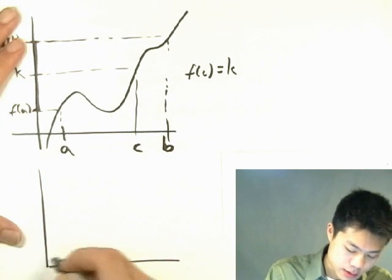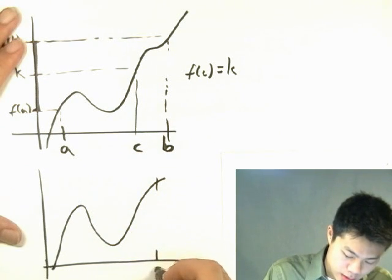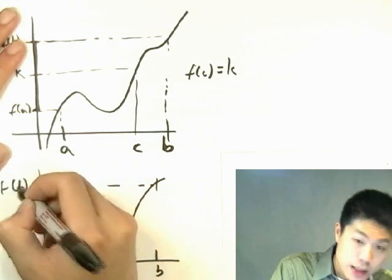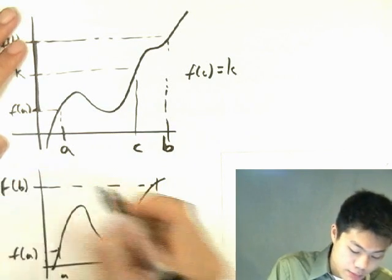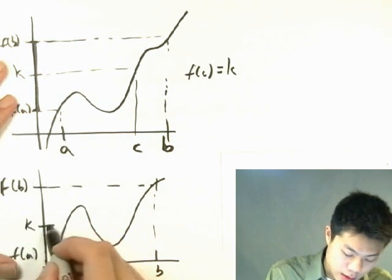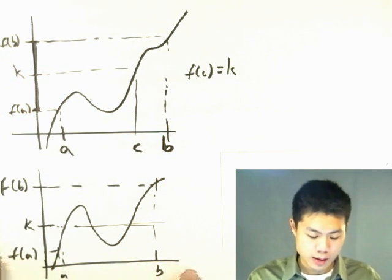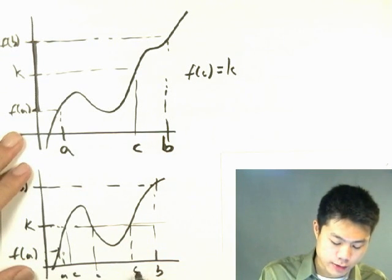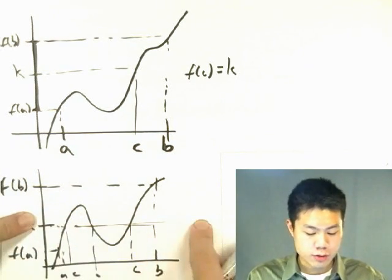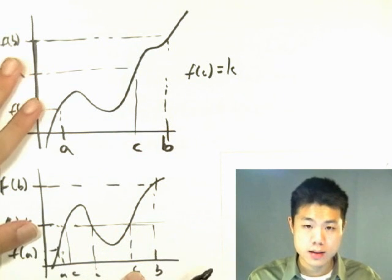But say we had a different case where b was here and a is here, so f(a) and f(b) are different values. Say k was here — the Intermediate Value Theorem tells me there is going to be at least one c. But here, if we look at it, there are actually three such c values where f(c) equals k. So the graph passes through the value k three times — here, here, and here. That's more or less what the Intermediate Value Theorem is telling us.